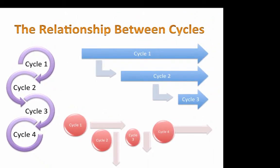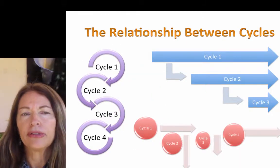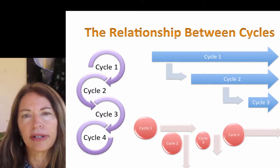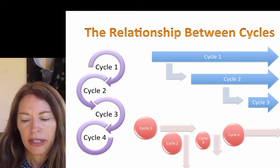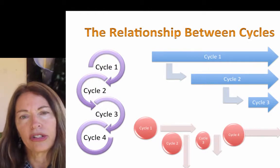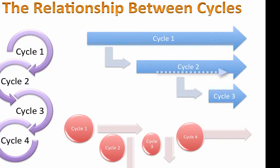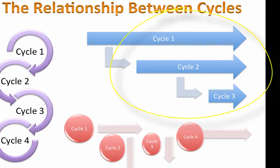You will see spirals that say cycle one leading immediately to cycle two leading to cycle three — this is the normative pattern and there's nothing special about three cycles. They don't always lead directly to the next cycle and cycles don't always stop. You can have different kinds of patterns, and I tried to illustrate a few of them in this slide. For example, all three cycles can run concurrently.